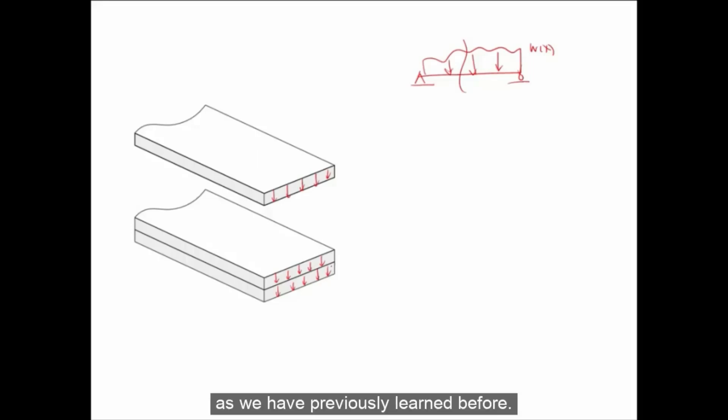As we have previously learned before, that is equal to tau, which is equal to VQ over IT. And now we make another cut that separates the boards. As we can see here, the boards are separated.